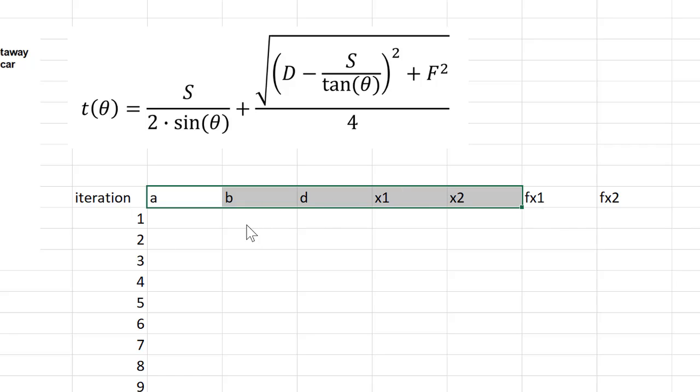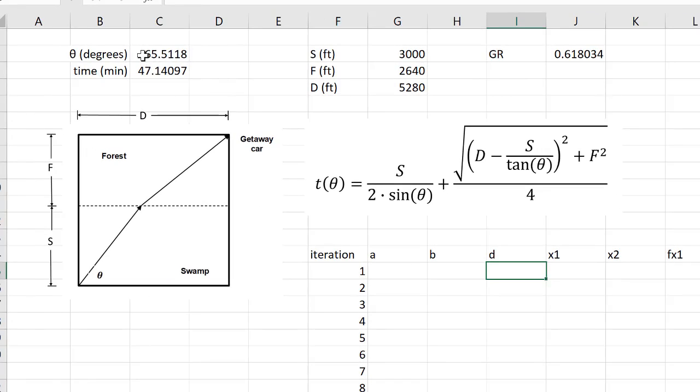that you can change, so you can independently change that has an effect on the output. So the thing that you can change, the thing that you are adjusting, is theta, which is the degrees. So that's the independent variable in this function here. And then the output is the time.